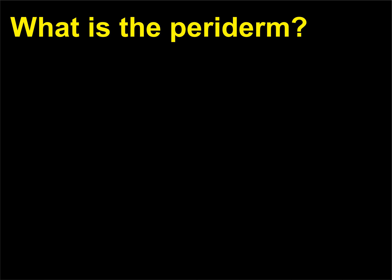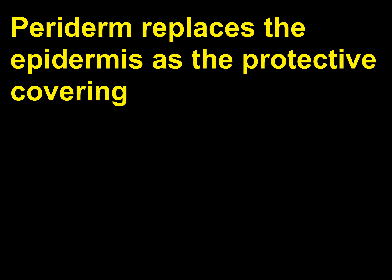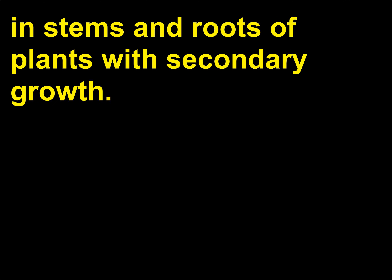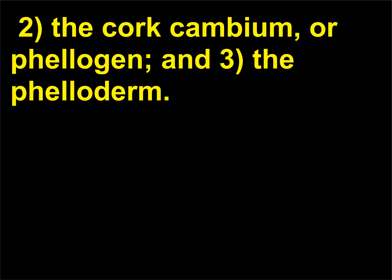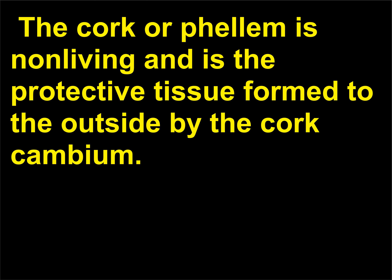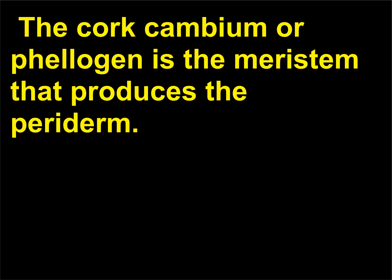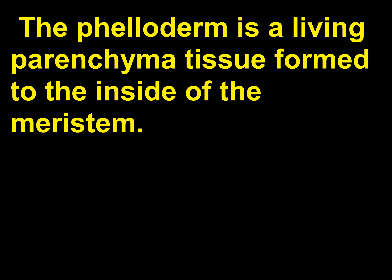What is the periderm? Periderm replaces the epidermis as the protective covering in stems and roots of plants with secondary growth. The periderm consists of three structures: (1) the cork or phellem, (2) the cork cambium or phellogen, and (3) the phelloderm. The cork (phellem) is non-living and is the protective tissue formed to the outside by the cork cambium. The cork cambium (phellogen) is the meristem that produces the periderm. The phelloderm is a living parenchyma tissue formed to the inside of the meristem.